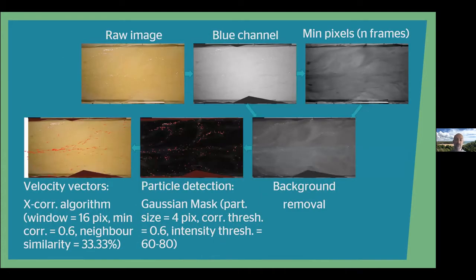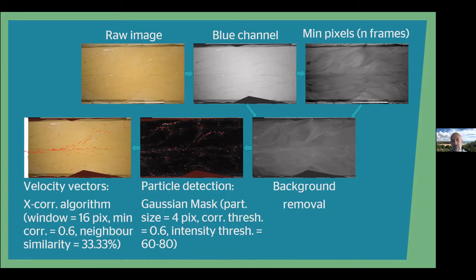I also had to modify it so that it operated only on the blue channel rather than the mean of the red, green and blue channels. Furthermore, rather than subtracting the average image from the frame sequence, I extracted the minimum image. This was because some of the hammer beads got stuck, and if I subtracted the mean I got negative intensity values, which would mean that I would miss my beads.